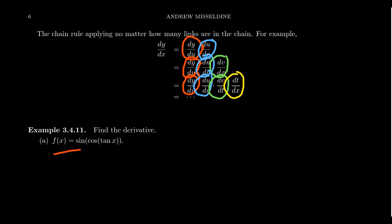Let's look at a specific example. Consider the function f(x) = sin(cos(tan(x))). We have this triple-nested trigonometric function: tangent inside of cosine, inside of sine. As we investigate the inner functions, we see tangent of x on its own, but this tangent function sits inside cosine, which sits inside sine. By the chain rule, we should take the derivative of all of these functions in sequence.